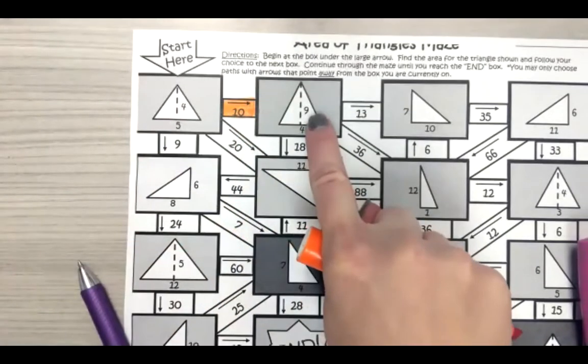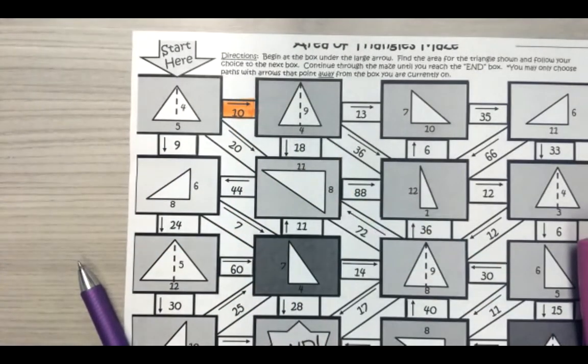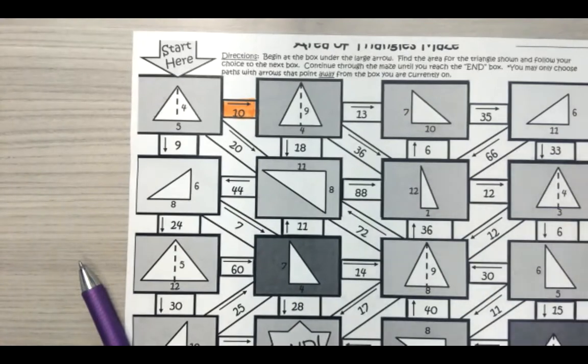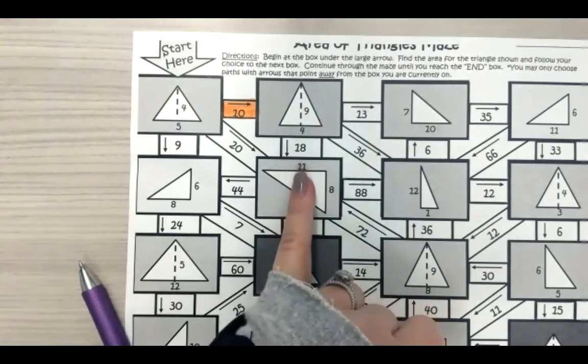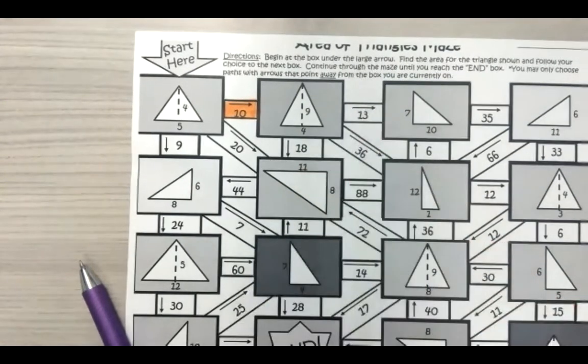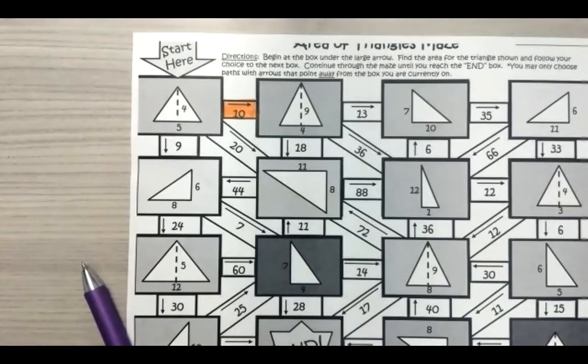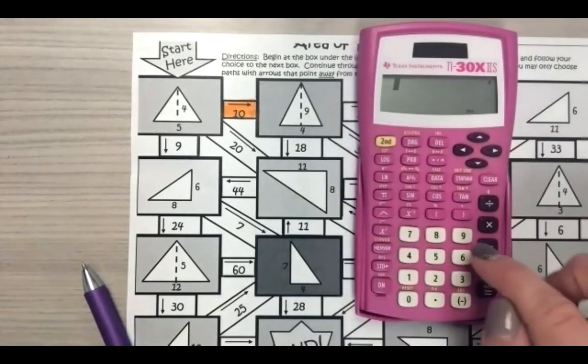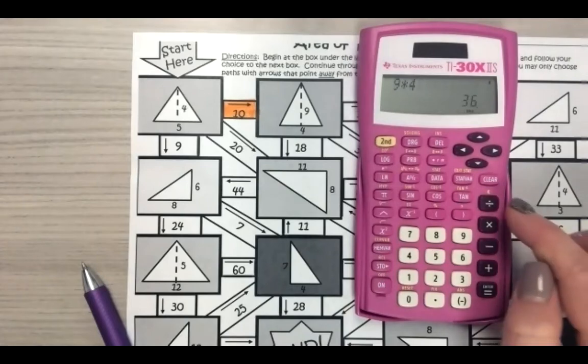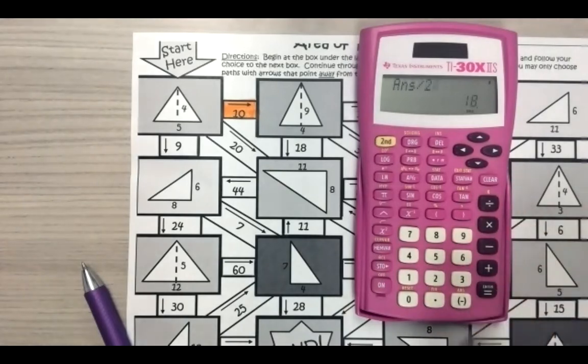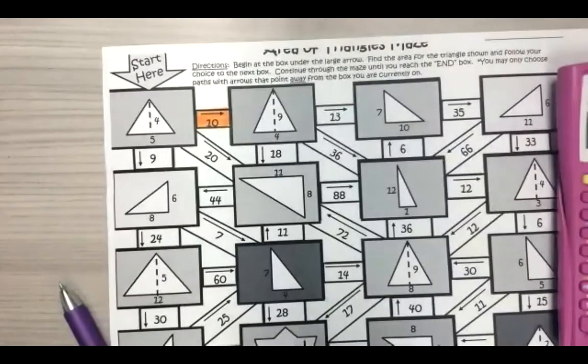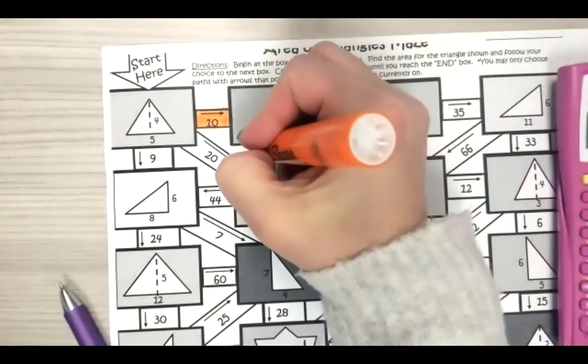So I'm going to go ahead and highlight or color in that path. So we started here and now we are on this triangle. This triangle is nine times four. So we need to take nine times four, which is 36. Right. And what's 36 divided by two, everyone? Is it 18, 36 or 13? Hopefully you got 18. You need to check your work. You would just go nine times four equals 36 divided by two equals 18. Boom. So 18 is our answer. So it looks like we're going down.